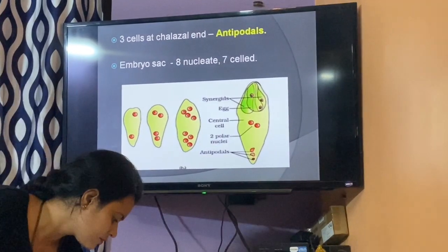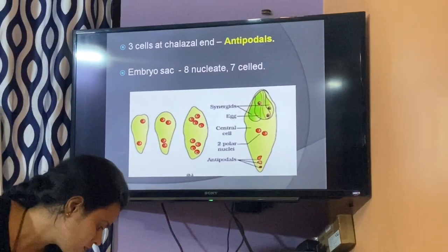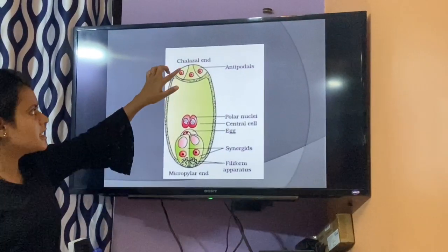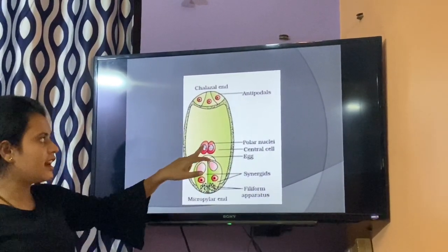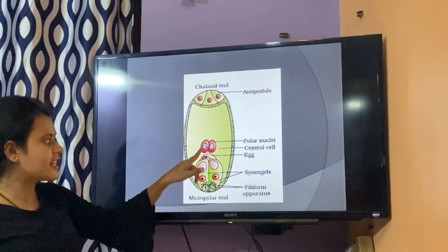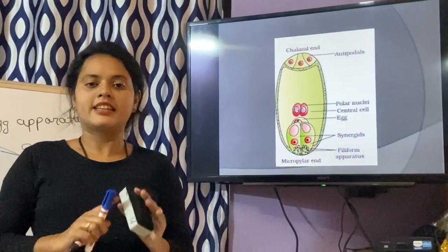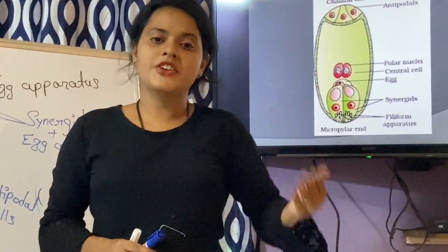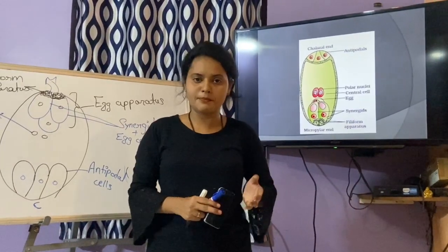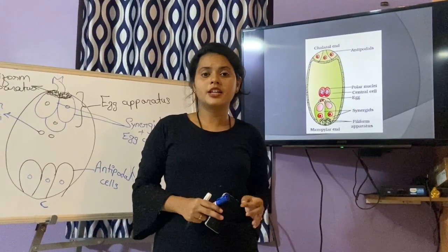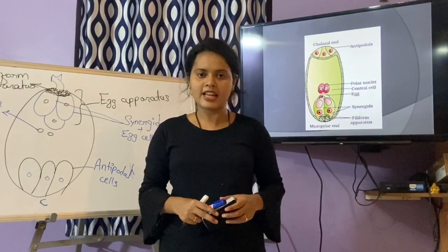So total: three antipodal cells, two synergids, one egg cell, one main central cell — seven cells — and eight nuclei total. The embryo sac or female gametophyte is having seven cells but eight nuclei. That's it for today. In the upcoming video I will tell you about double fertilization in flowering plants. If you have any difficulty, ask me in the comment section and please subscribe for upcoming videos. Thank you students.